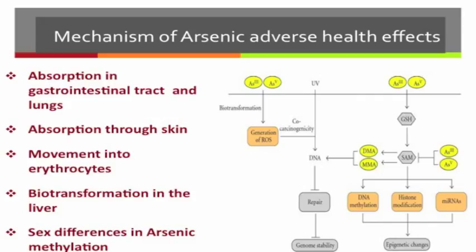Inorganic arsenic undergoes biotransformation in the liver. Here, arsenic-5 is reduced to arsenic-3, and then an oxidative addition of a methyl group occurs. The methyl group comes from S-adenosylmethionine (SAM), and glutathione acts as a reducing agent.